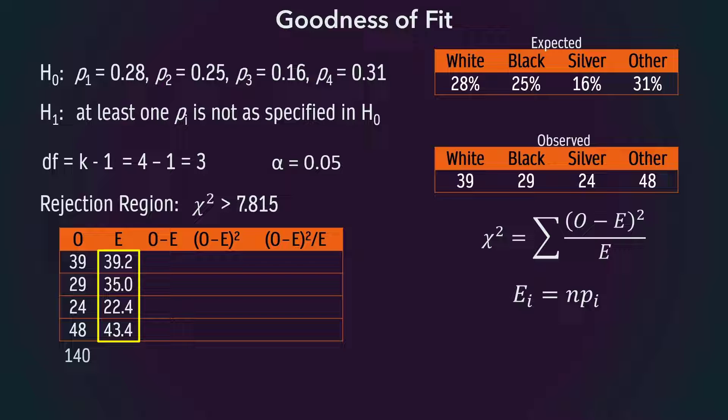Adding this up, we get a total expected of 140 as well. This is not a coincidence. The expected frequencies must add up to the same total as the observed frequencies, since the expected proportions add up to 1.